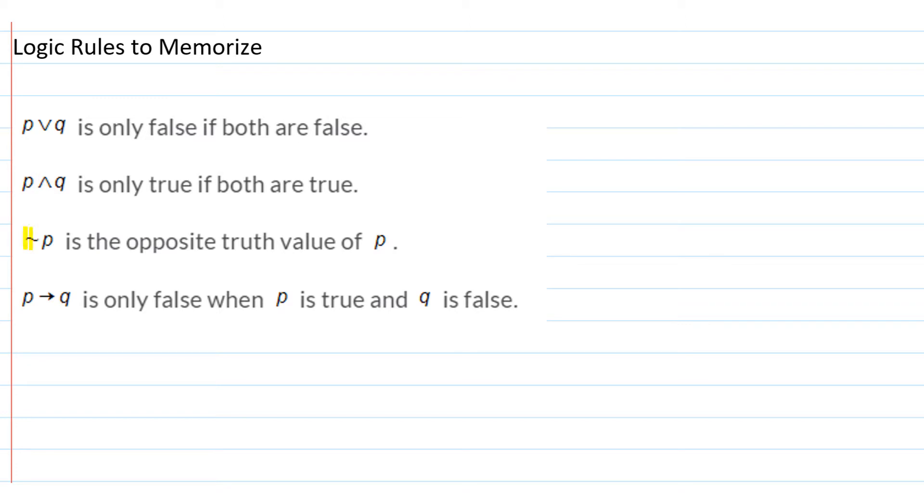The next symbol here, this is a negation. This is read not. Not P is the opposite truth value of P. So if P is true, not P is false and vice versa.